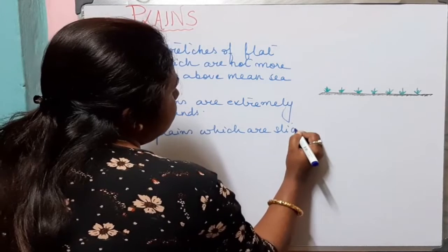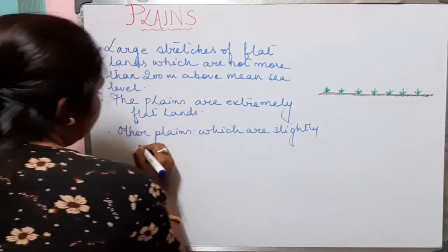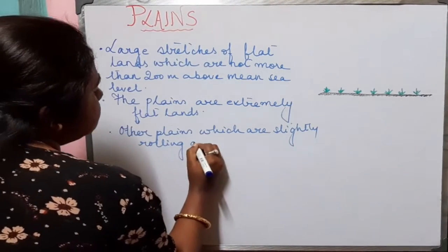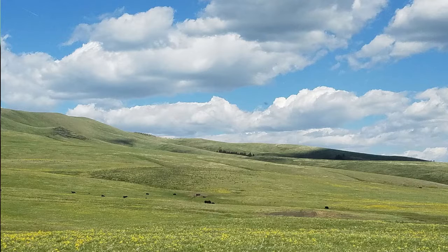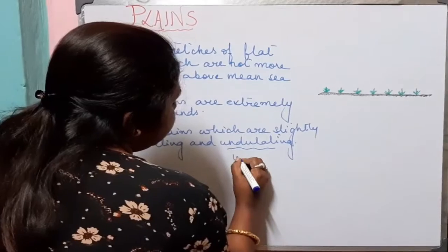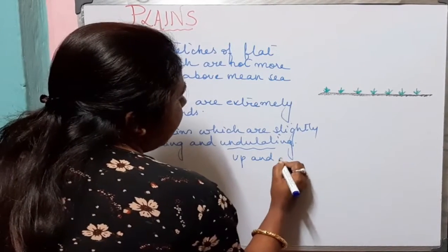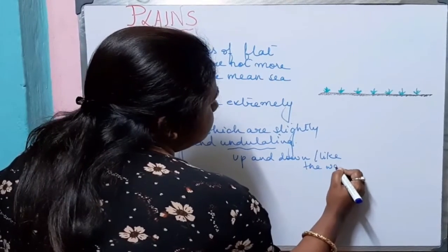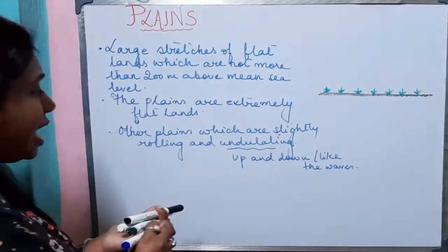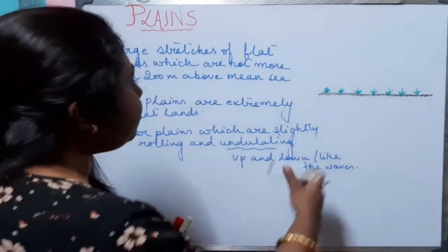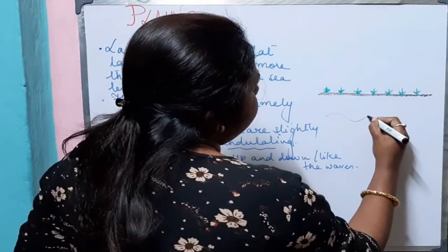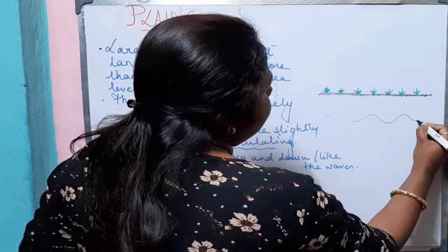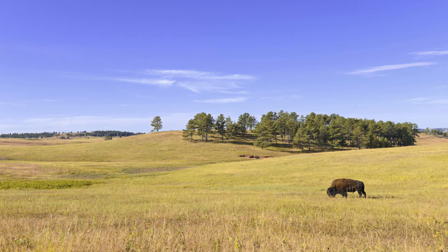We will also see that there are plains which are slightly rolling and undulating. What do we mean by undulating? It means up and down, just like the waves. So plains are extremely flat lands and some are slightly rolling and undulating.